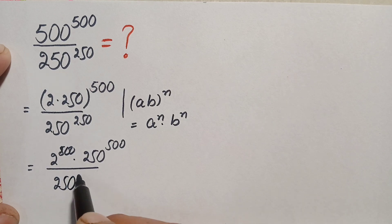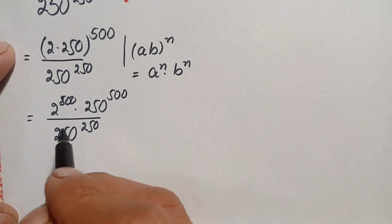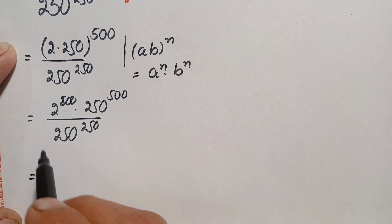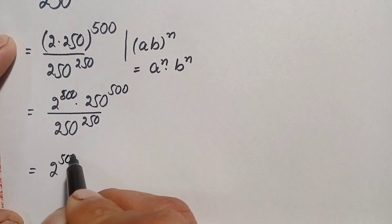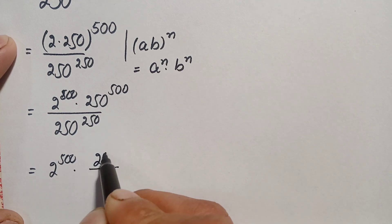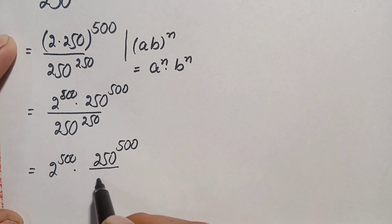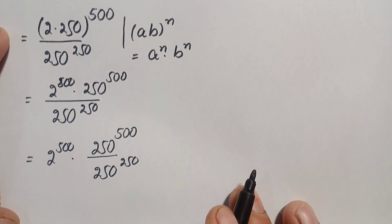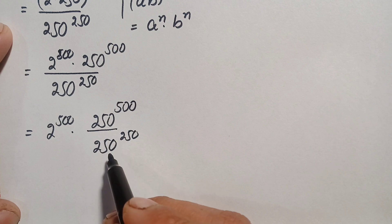Dividing by 250 raised to power 250, we can split this into 2 raised to power 500 times 250 raised to power 500 divided by 250 raised to power 250. Looking at these two numbers, they have the same base 250.